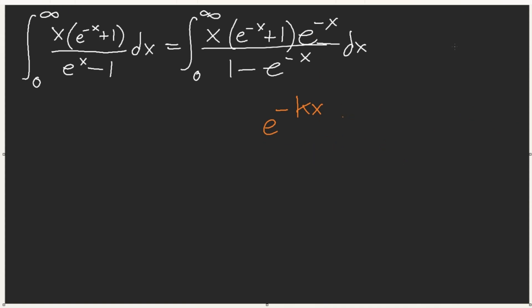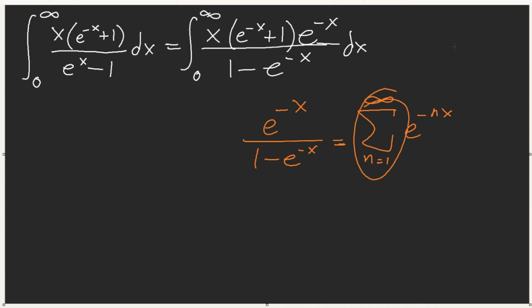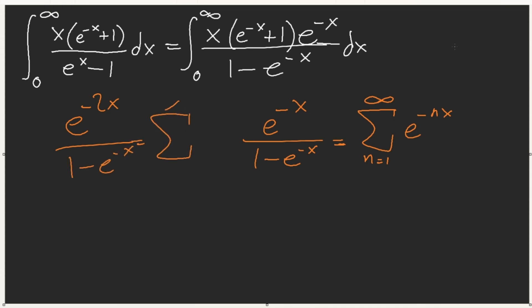For now what we have is e^(-x) / (1 - e^(-x)), which is just the sum from n=1 of e^(-nx). Instead of writing the geometric series and having that bother your integration, you can put it directly into your sum. We can distribute this, and on one side we'll end up having e^(-2x), using the sum from n=2.